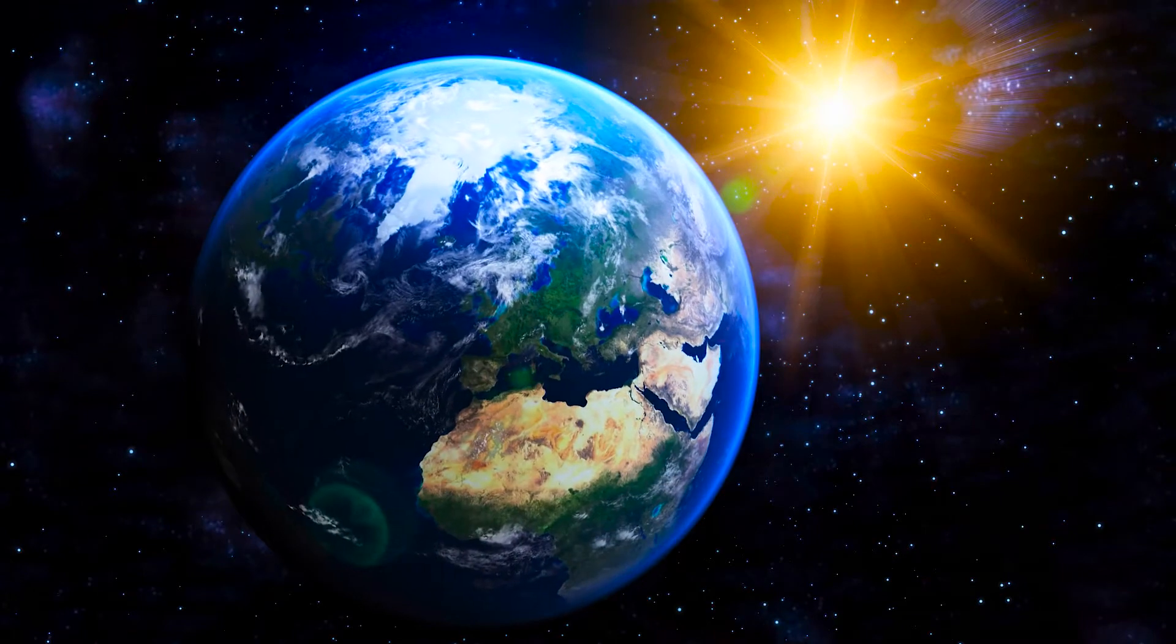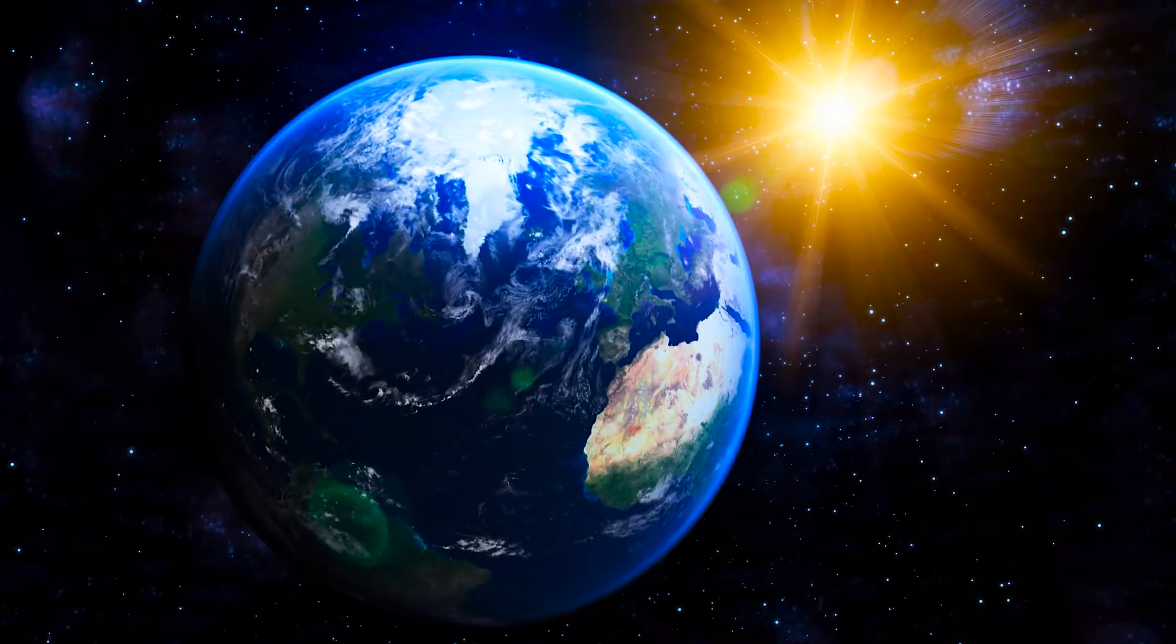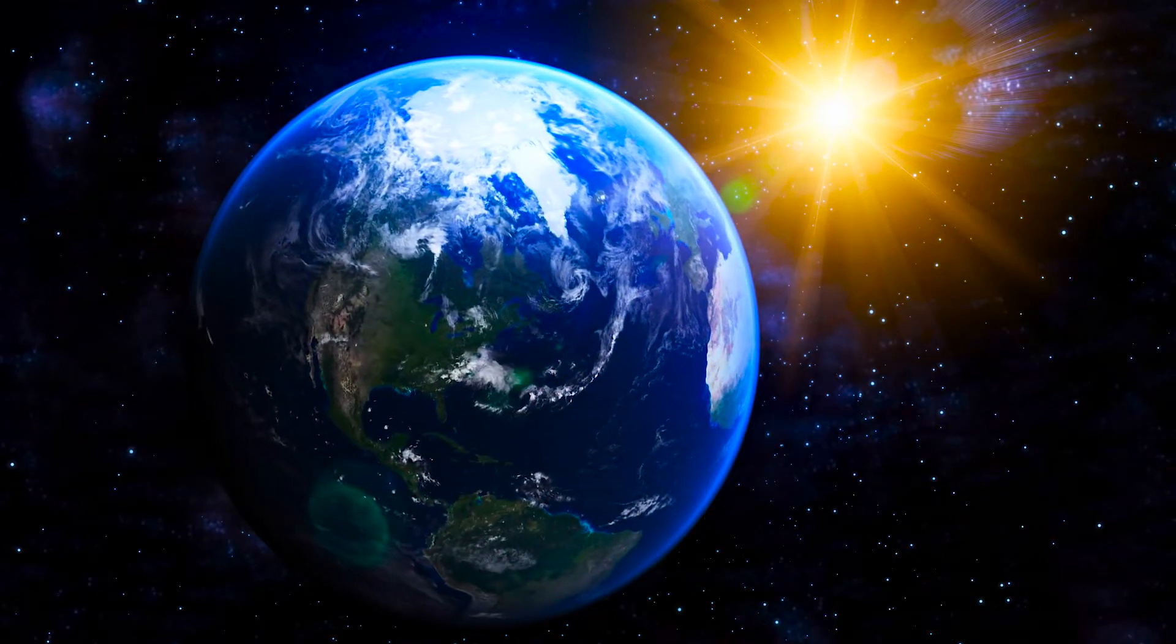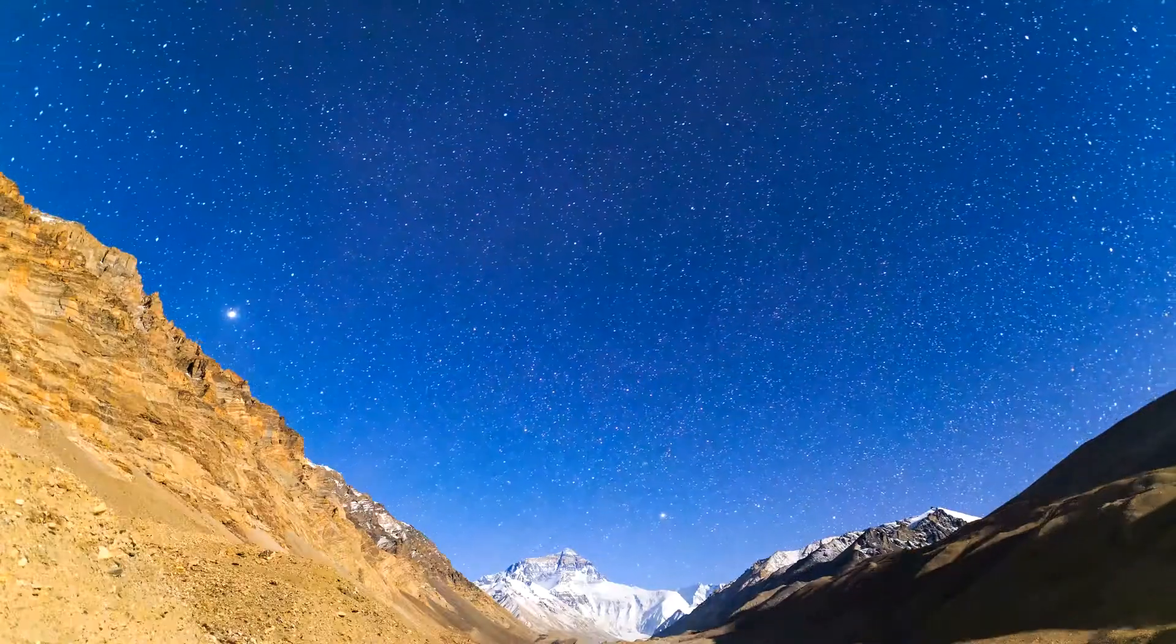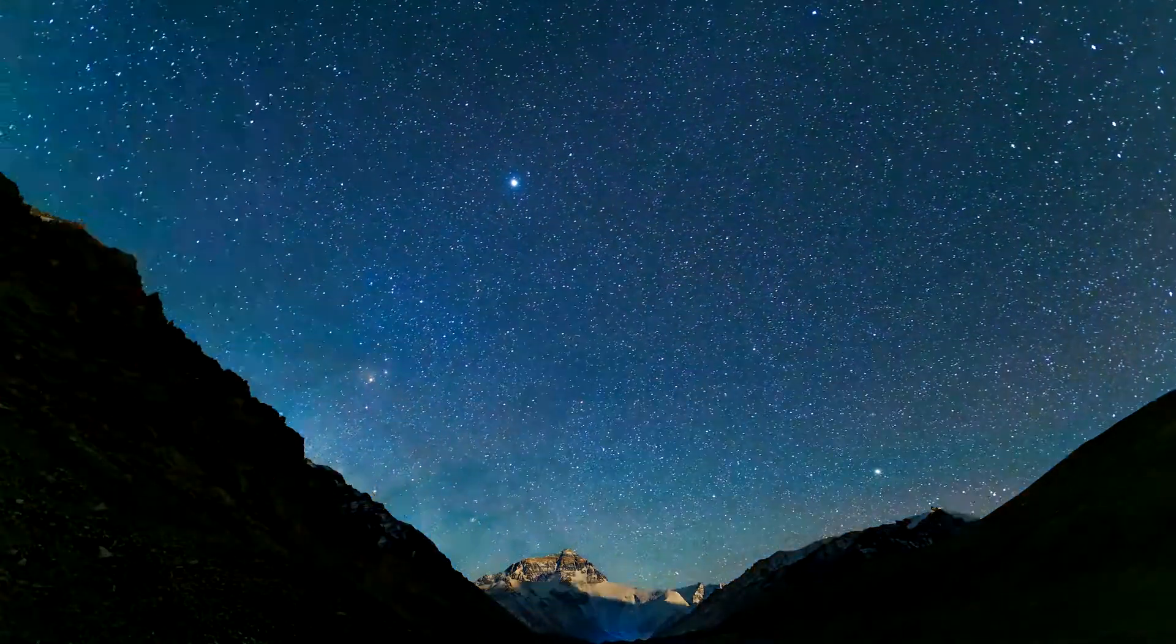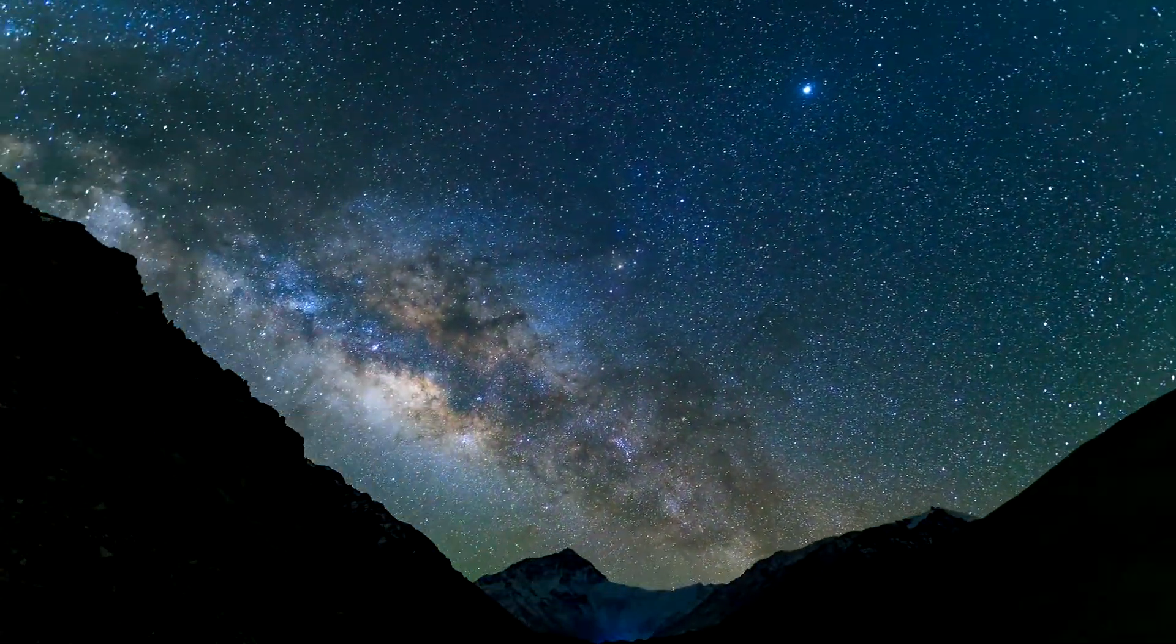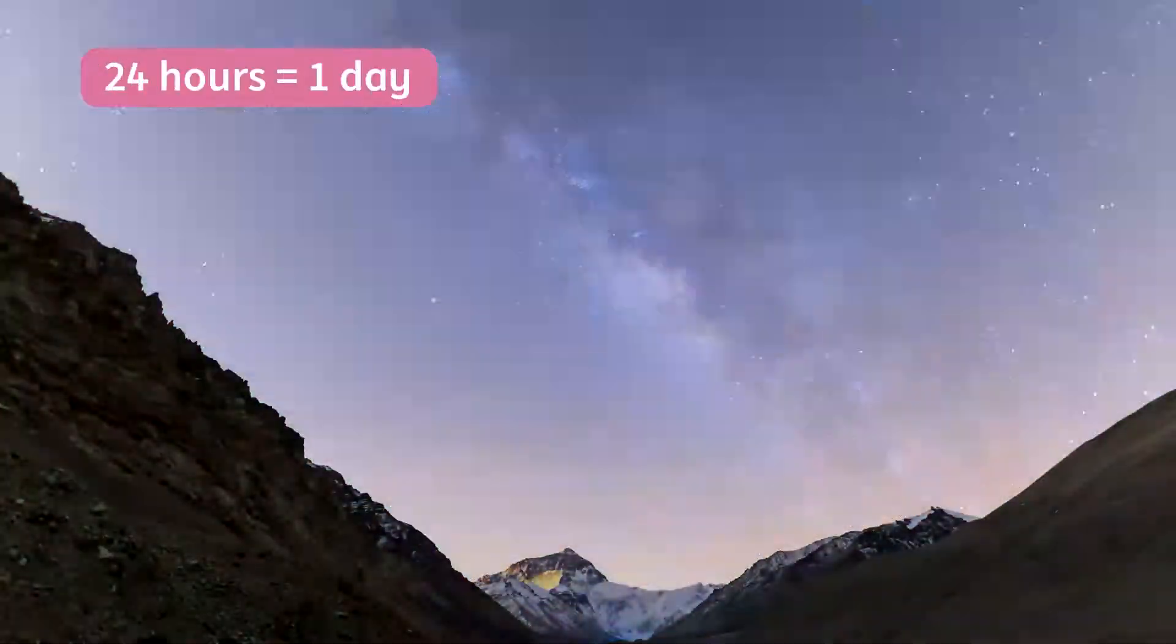Do you know why it's dark at night? It's because the Earth turns, and the sun is on the other side. How long does it take the Earth to turn? 24 hours, or one day.